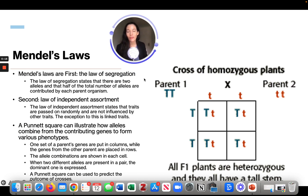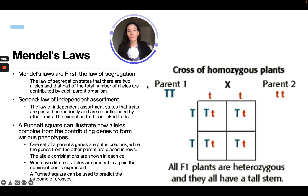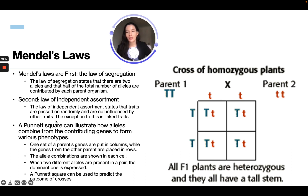The first is the law of segregation, which states that there are two alleles and that half of the alleles are contributed by each parent. An allele is a trait — it can be height, eye color, hair color, things like that. So there'll be two traits, one from each parent. The second law is the law of independent assortment, which states that traits are passed on randomly and are not influenced by other traits. So if someone has blonde hair, that doesn't mean they're going to have blue eyes.